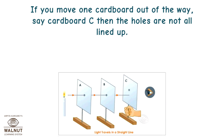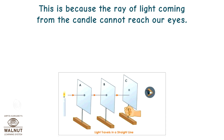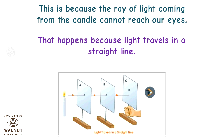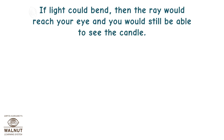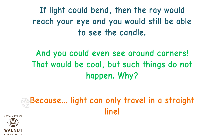If you move one cardboard out of the way — say cardboard C — then the holes are not all lined up. You will not be able to see the candle, because the ray of light coming from the candle cannot reach our eyes. That happens because light travels in a straight line. If light could bend, the ray would reach your eye and you would still be able to see the candle — and you could even see around corners. But such things do not happen, because light can only travel in a straight line.